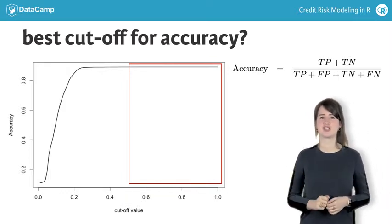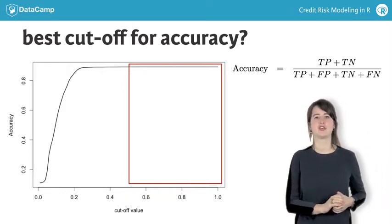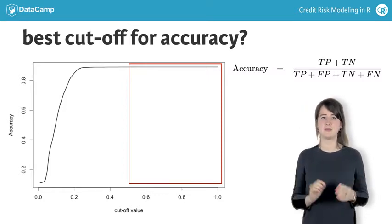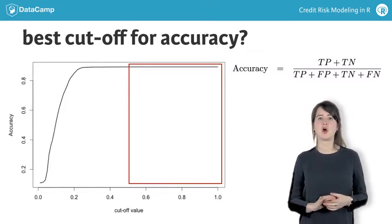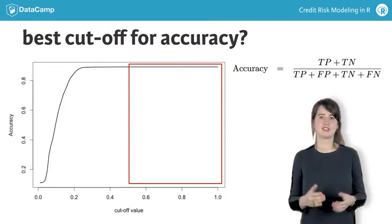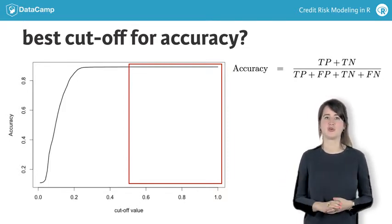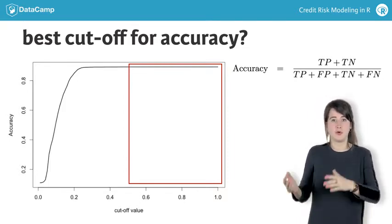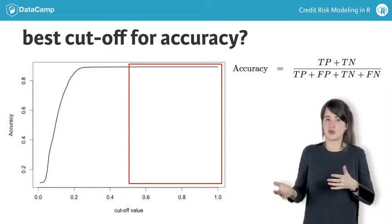It is important to stress that the increasing nature of accuracy as the cutoff increases is a very typical result for credit risk modeling, or in general, any kind of logistic regression model with unbalanced groups, which can be way more ones than zeros, or the other way around.